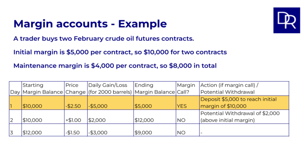The broker issues a margin call. The action required is to deposit $5,000 to bring the account back to the initial margin of $10,000. On day two, after meeting the margin call, the starting margin balance is back at $10,000. Let's say the price increases by $1 per barrel — that's a gain of $2,000. The ending margin balance rises to $12,000. Margin call: no. In fact, the balance is now above the initial margin, with a potential withdrawal of $2,000. The trader could withdraw this excess or leave it in the account.